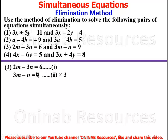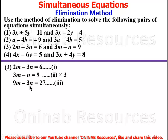We multiply equation 2 by 3, transforming it into equation 3, which now has the same coefficient of n as equation 1. We study the signs: both coefficients of n are negative 3. Since they are the same sign, we subtract. We say equation 3 minus equation 1.